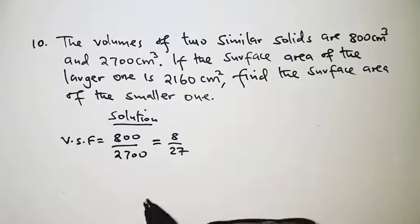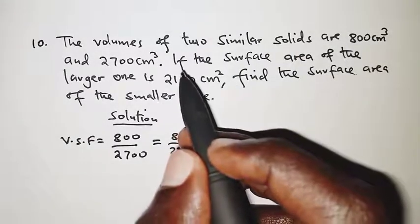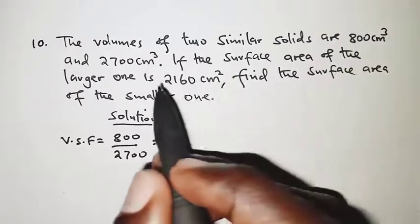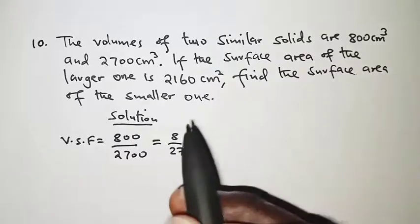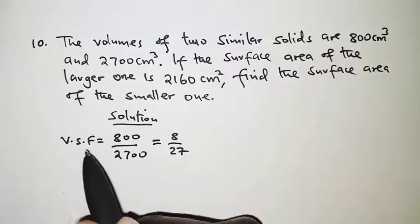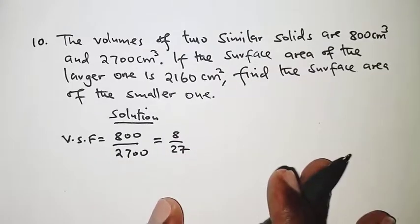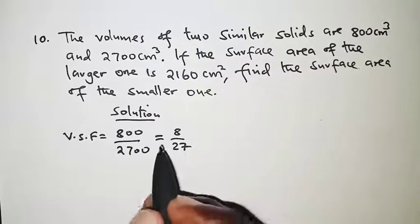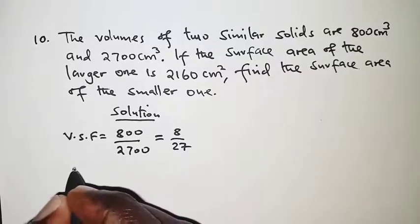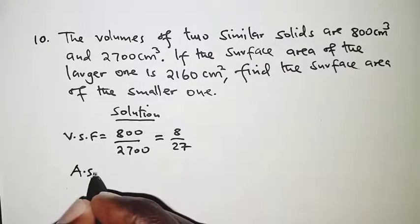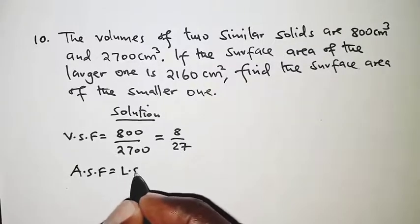Remember, from the question we are asked to find the surface area of the smaller one, so we cannot use the volume scale factor to find surface area. We will first have to obtain the area scale factor. The area scale factor is obtained from the linear scale factor squared.